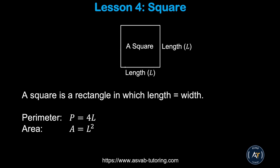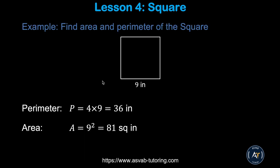Now we'll learn how to find the area and perimeter of a square. A square is a four-sided shape where all sides are the same, meaning length and width are equal. The perimeter of a square is 4 times l, and the area equals l squared.